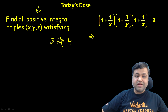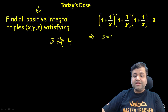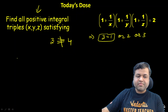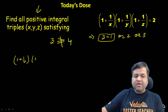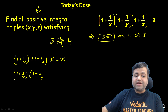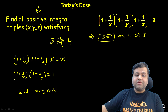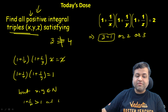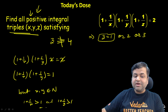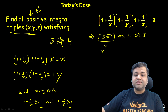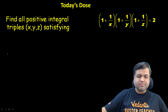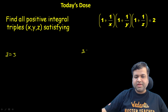Since z must be a positive integer, z can be 1, 2, or 3. But if z = 1, then (1 + 1/z) = 2, and the equation reduces to (1 + 1/x)(1 + 1/y) = 1. However, since x and y are positive integers, both (1 + 1/x) and (1 + 1/y) are strictly greater than 1, so their product cannot equal 1. Hence z = 1 is rejected. We are left with only two possibilities: z = 2 and z = 3.